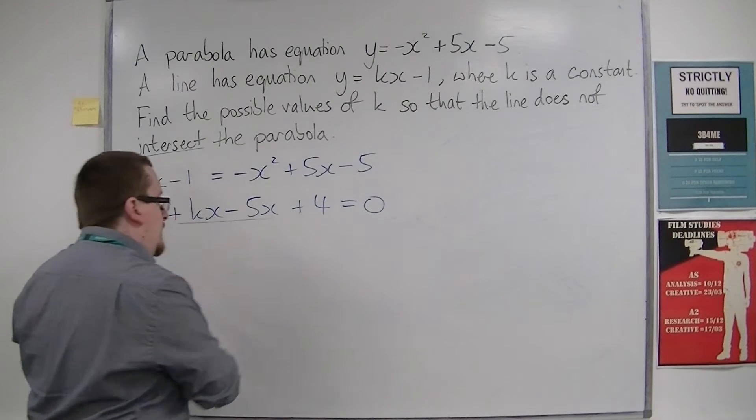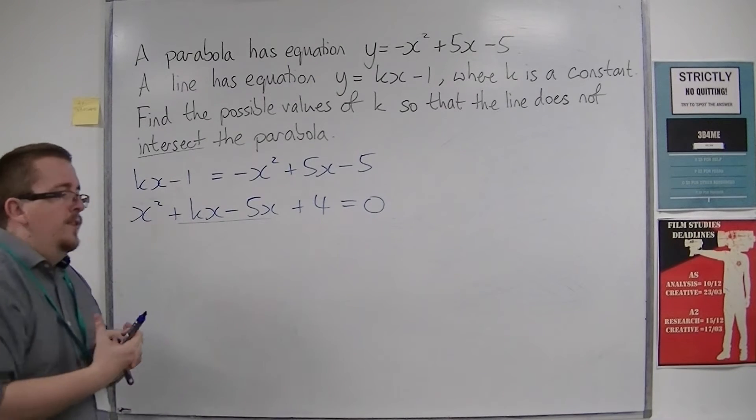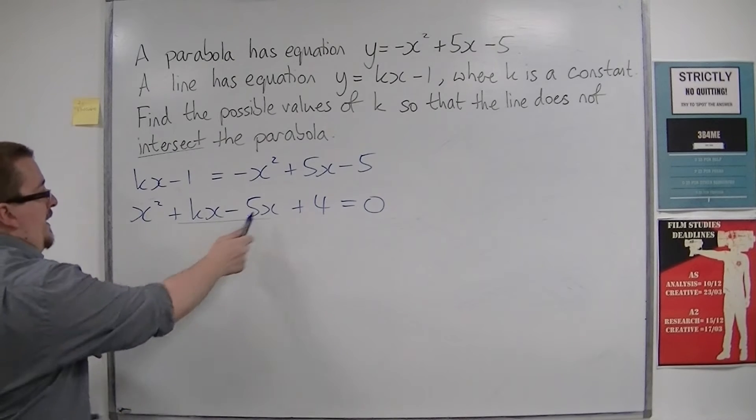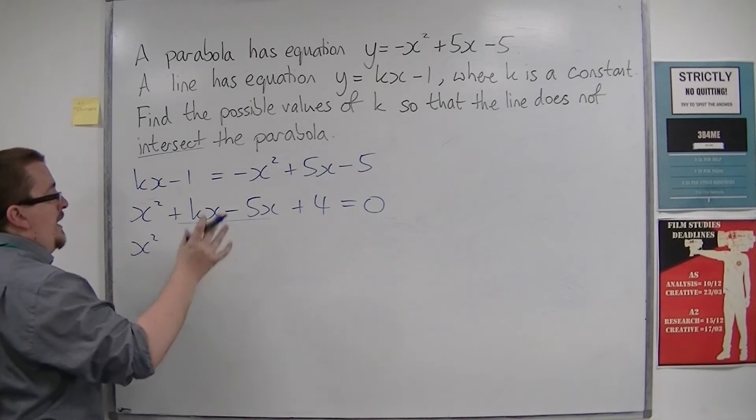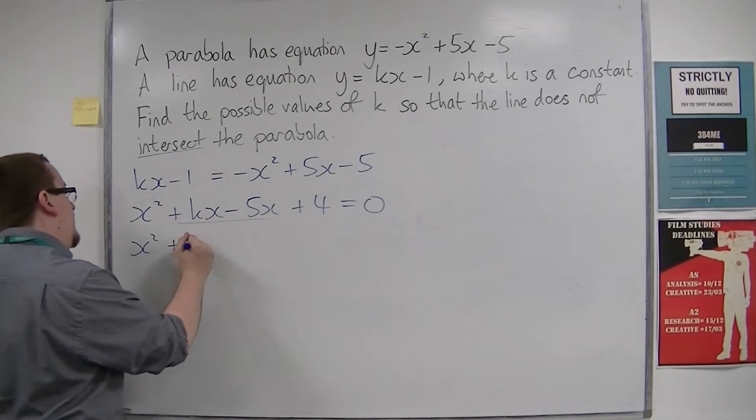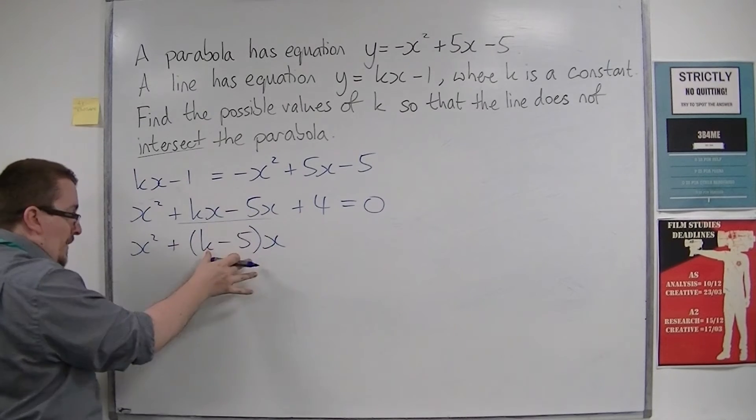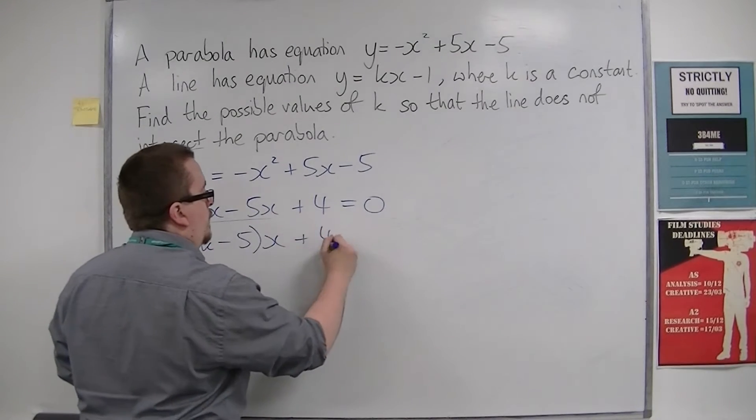Now, what I'm going to do here is I want to have just a singular x there. So I'm going to factorize that. So instead of having kx minus 5x, I'm going to have k minus 5 times x. So I'll factorize that bit, plus 4 equals 0.